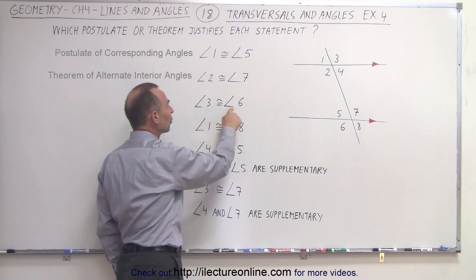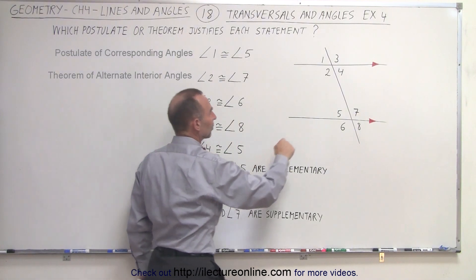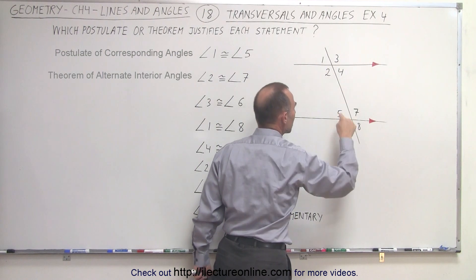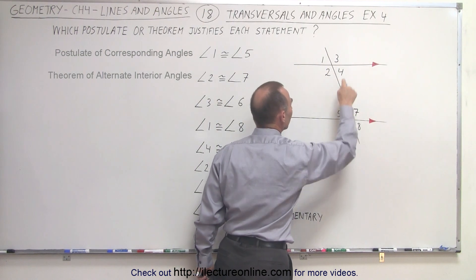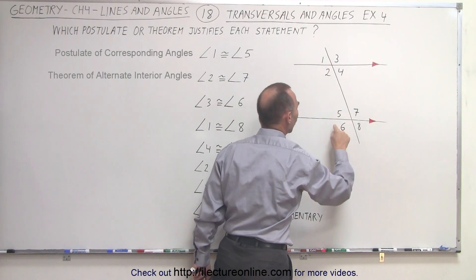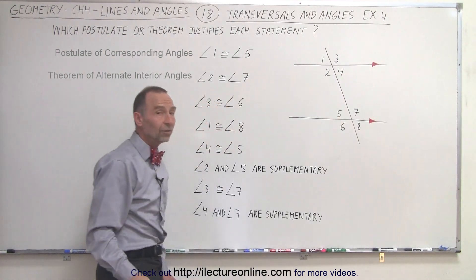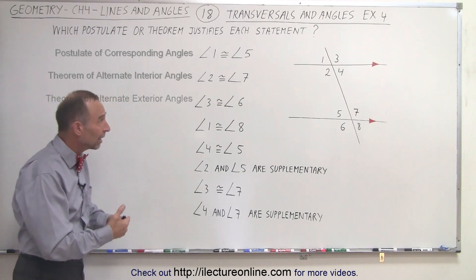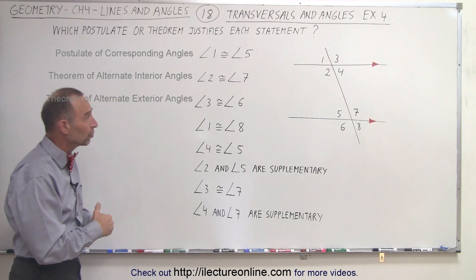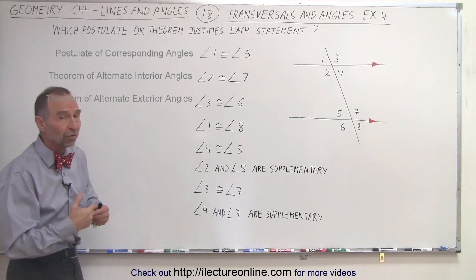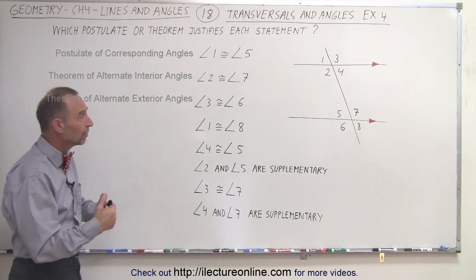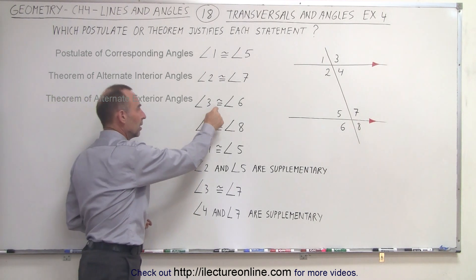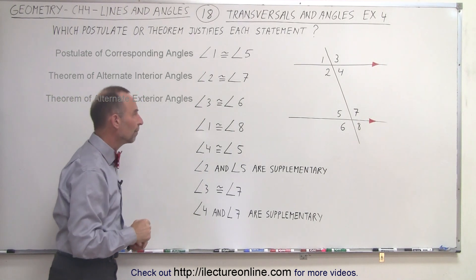Angle three is congruent to angle six. Here's angle three and here's angle six. These are alternate exterior angles, and by the theorem of alternate exterior angles we know that they must be the same — they have the same measure, therefore they are congruent.